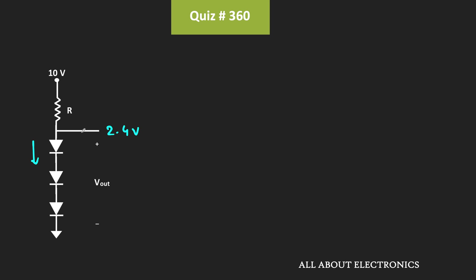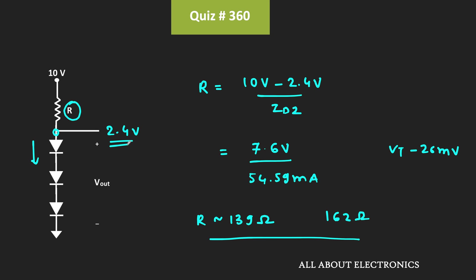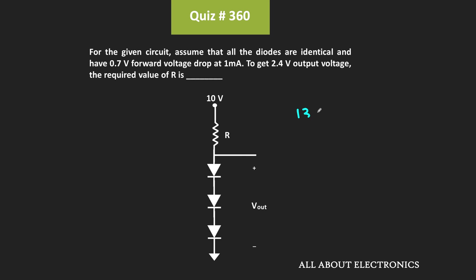So to get this current, let us find the value of R. We know the voltage at this end is 2.4V and the supply is 10V. So R = (10V - 2.4V) / 54.59mA. Calculating this, R comes out to approximately 139 Ohm. So for the given conditions with Vt = 25mV, the value of R is 139 Ohm.